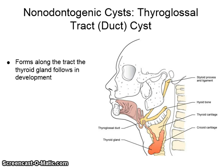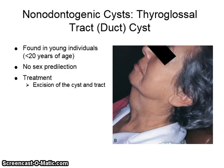The thyroglossal tract or duct cyst forms along the tract that the thyroid gland follows in development. It is found in young individuals less than 20 years of age and has no sex predilection. The treatment is excision of the cyst as well as the tract.